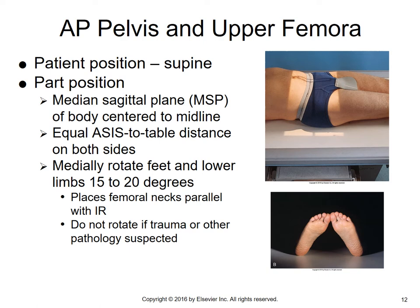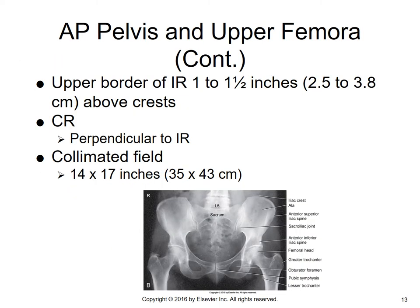If there is trauma involved — a suspected broken hip — we don't want to do any rotation of the limb so as not to injure the patient further. The upper border of your IR should be about 1 to 1½ inches above the crest, providing you're collimating correctly to a 14 by 17. Your central ray is perpendicular, going generally about 2 inches above the symphysis pubis.